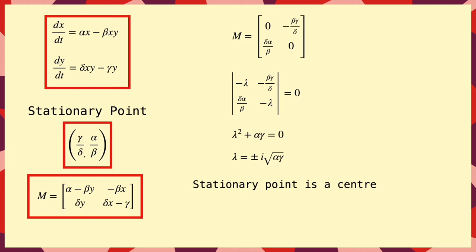It's neither stable nor unstable, instead the trajectories nearby look like circles or ellipses, and just go round the fixed point.